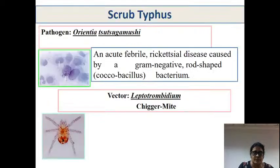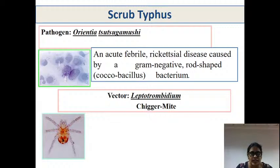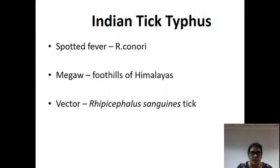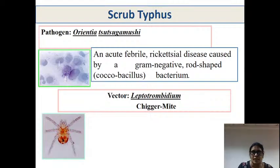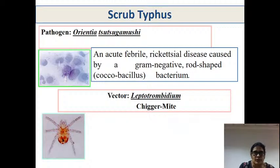Next, coming to scrub typhus: Rickettsia prowazekii causes epidemic typhus, Rickettsia typhi causes endemic typhus, Rickettsia rickettsii causes Rocky Mountain spotted fever, and Rickettsia conorii causes Indian tick typhus. Scrub typhus is caused by Orientia tsutsugamushi.